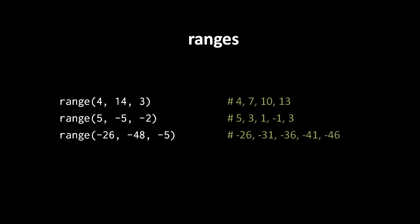When we create a range, we can optionally specify a third argument known as the step. The step of a range, by default, is positive 1, and it denotes that from the start value you get the next value by incrementing by 1. If the step is something else, like positive 3, then you get the next value by incrementing by 3. Or if the step is negative, you get the next value by decrementing. For example, range(4, 14, 3) has a starting value of 4, an end value of 14, and a step of 3, so the sequence goes 4, 7, 10, 13 — there's no 16 because 16 is greater than or equal to the end value 14.